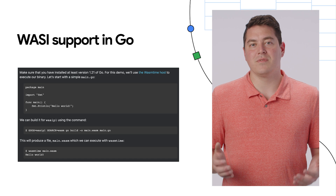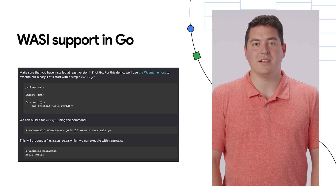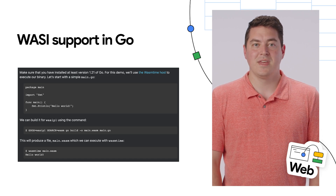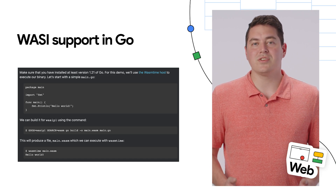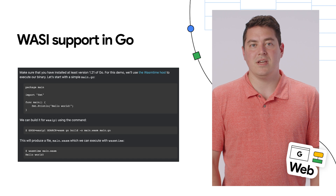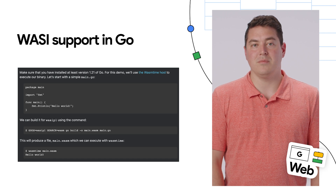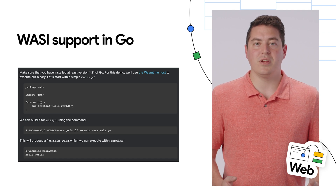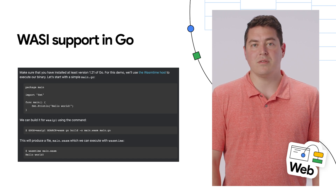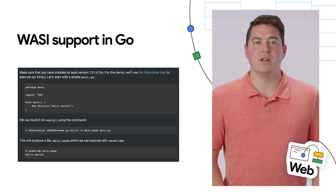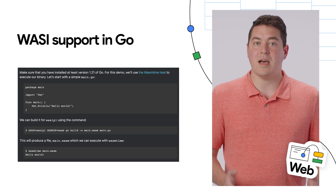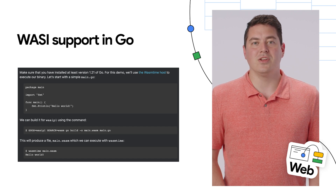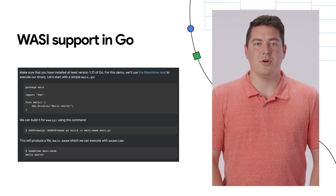Next, we can head over to Go to talk about some exciting updates with WASM. Go can now target WASM via a new API in preview. This allows you to bring WebAssembly out of the browser and run sandboxed applications on the server. You can learn more on the Go blog.